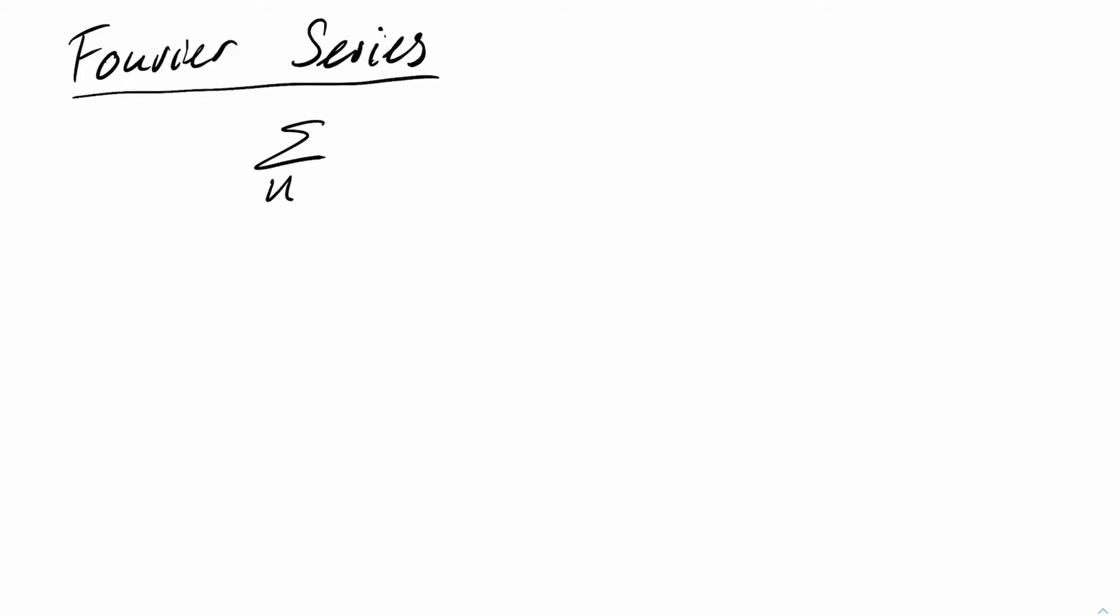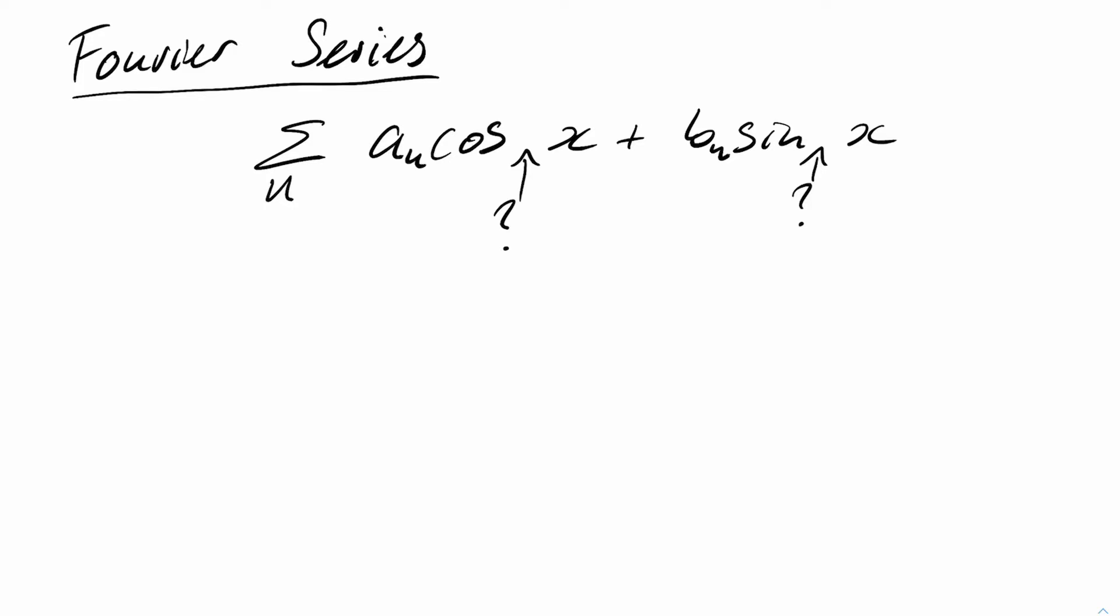So what would a series like this look like? So generically, we would have a sum over n and some cosines and sines. Let's say we have coefficients a_n and b_n. Then what would go in here? Obviously, just adding different amplitudes of cos and sine would just give us cos plus sine. Wouldn't be very interesting. So we need to add up different frequencies.